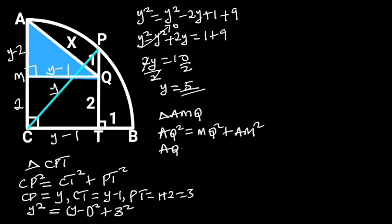AQ is equal to X, MQ is equal to Y minus 1, and AM is equal to Y minus 2. Substituting these values in this formula will give us X squared is equal to Y minus 1 squared plus Y minus 2 squared.